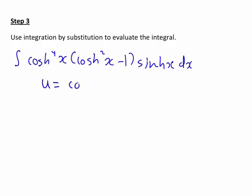So the next step is to use integration by substitution, where in this case we let u be equal to cosh(x), as that is the function that we have the more complicated expression in relation to.